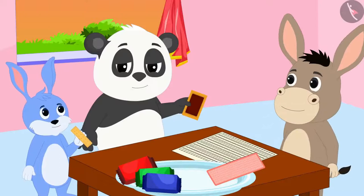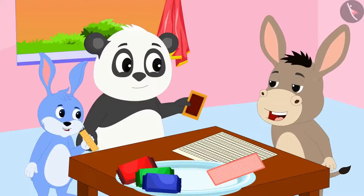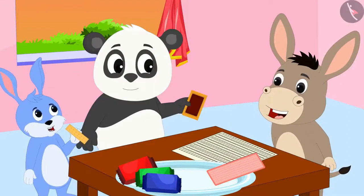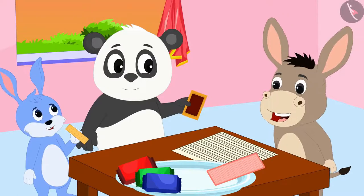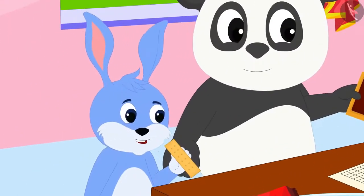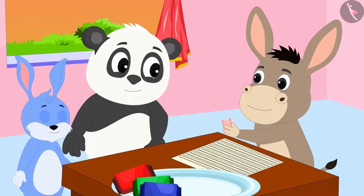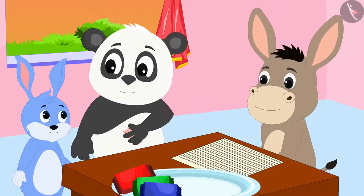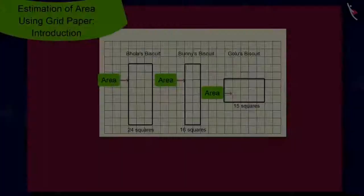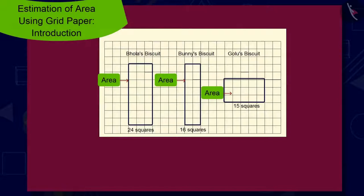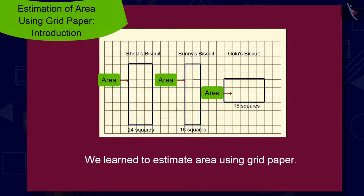This is such an interesting thing you have taught us, Bholla. Let us all share our biscuits and eat them. Bunny said to Bholla. The three friends shared their biscuits and ate them with great pleasure. Children, in this video we learned to estimate area using grid paper. In the next video, we will learn more about it through some interesting examples.